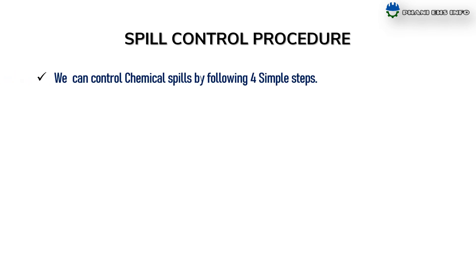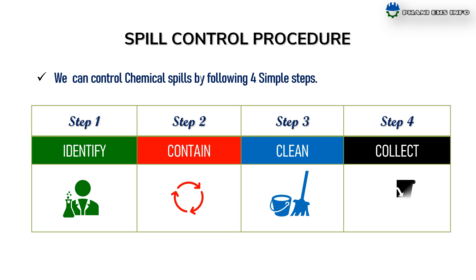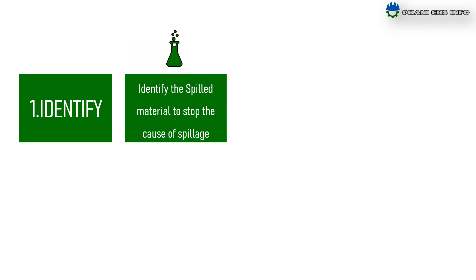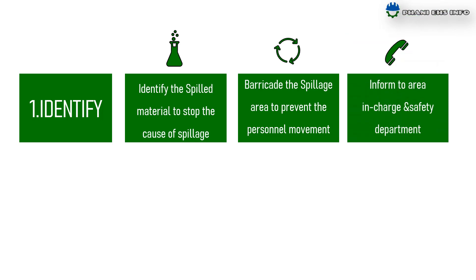Spill Control Procedure. We can control chemical spills by following these 4 simple steps: Identify, Contain, Clean, and Collect. The first step is Identify. Identify the spillage material and stop the cause of spillage. Barricade the spillage area to prevent personal movement. Inform the area in-charge and the safety department.